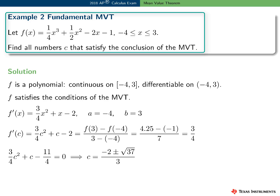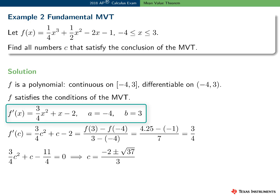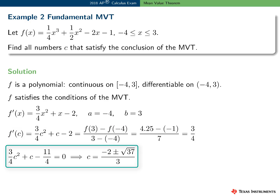Let's try an example applying the mean value theorem. Consider the function f on the interval minus four to three. Find all values c that satisfy the conclusion of the mean value theorem. First, f is a polynomial, so f is continuous and differentiable everywhere, so f satisfies the conditions of the MVT. Find the derivative f prime, set f prime of c equal to the quotient f of three minus f of minus four divided by three minus negative four. Solving for c, there are two values, and both are in the open interval minus four to three.